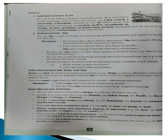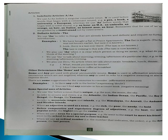We use the definite article 'the' when referring to things already known and definite, requiring no further introduction. For example: 'We have bought a flat in Prince Apartment' — here 'a flat' is indefinite, we don't specify which one. But in the next sentence 'The flat is superb' — now we are talking about that specific flat we already bought, so it becomes definite and we use 'the'.